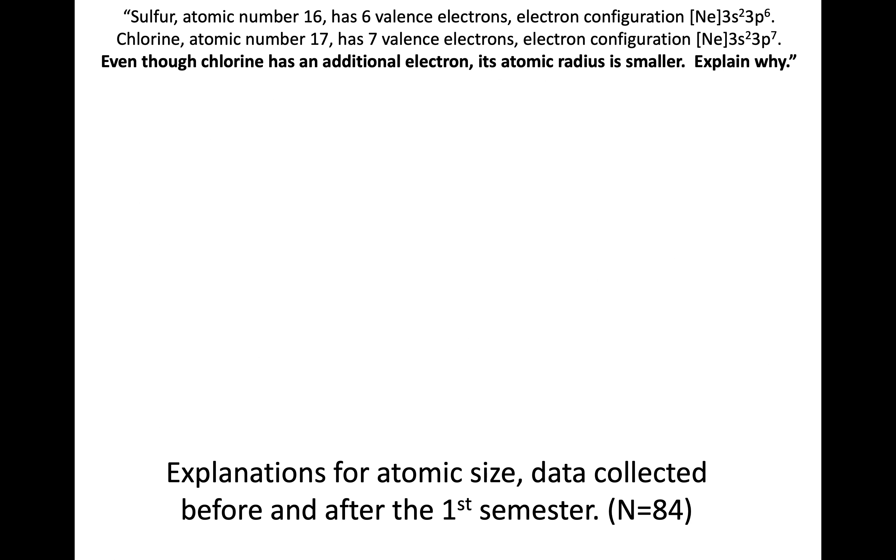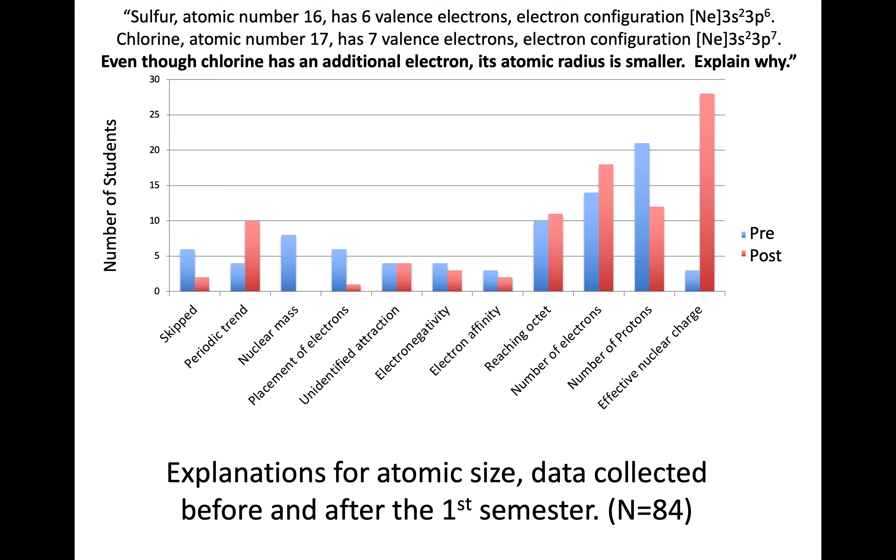I've looked at students' perspectives on this in different ways. This was a question I used seeking explanations for atomic size, before and after the first semester. The question describes sulfur and chlorine, noting that even though chlorine has an additional electron, its atomic radius is smaller. Explain why. When I categorized the responses to this open-ended question, both before and after the semester, several categories emerged.